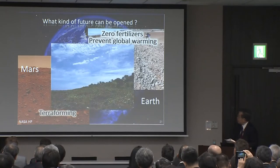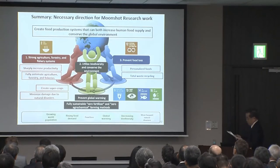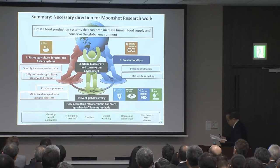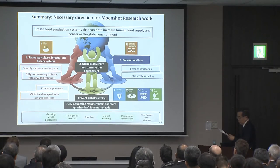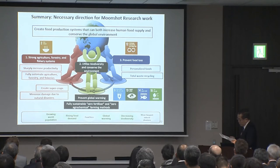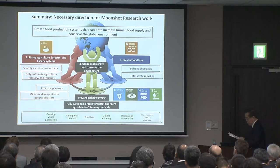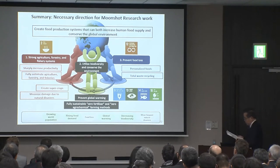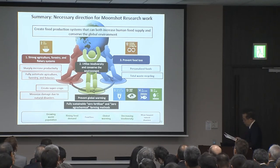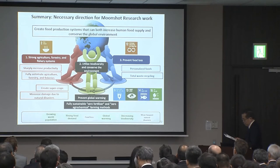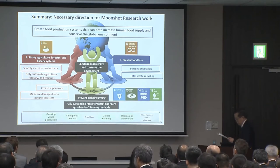In summary, consider the three research themes at the center of the slide. If even one of these is lacking, our goal will be difficult to achieve. I will strongly pursue these three research challenges in concert, with the aim of creating a food production system capable both of expanding our food supply and conserving our global environment. Thank you for your attention.